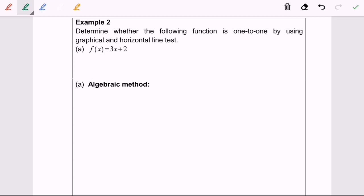The first method I'm going to discuss is the algebraic method. Step number one: I'm going to substitute x₁ and x₂ into the function. We will have f(x₁) equals f(x₂). So we see 3x₁ + 2 equals 3x₂ + 2.